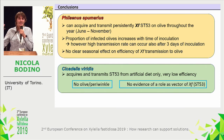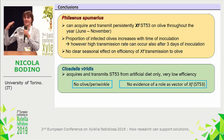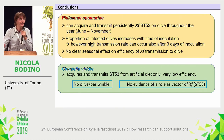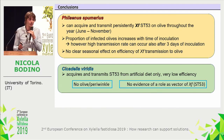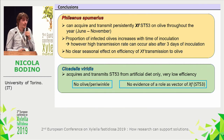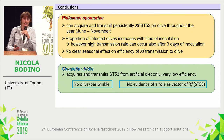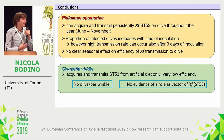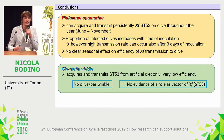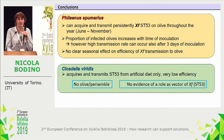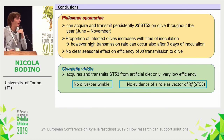In conclusion, Philaenus pumarius can acquire and transmit Xylella fastidiosa ST53 on olives through all the year, throughout its adult life. The proportion of infected olives tends to increase slightly with time of inoculation — the longer the insects stay in contact with the plants, the higher the probability the plants get infected. High transmission rate can also occur after only three days of inoculation. From a control perspective, we have to stop the adults before they reach the olive canopies. There is no clear seasonal effect on transmission efficiency. Cicadella viridis acquires and transmits Xylella fastidiosa ST53 from artificial diet only and with very low efficiency. Together with the ecological observation that it is not found on olive canopies, there is no evidence of a role as a vector of Xylella fastidiosa.